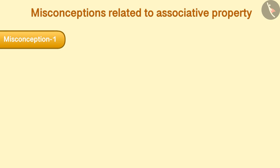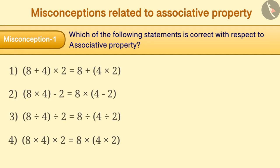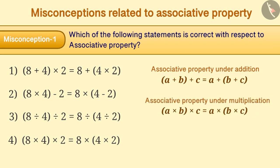Misconception 1. Which of the following statements is correct with respect to associative property? We already know that whole numbers are associative under addition and multiplication. Due to difficulty in understanding, associative property is used in an incorrect way and (8+4)×2 is assumed to be equal to 8+(4×2).